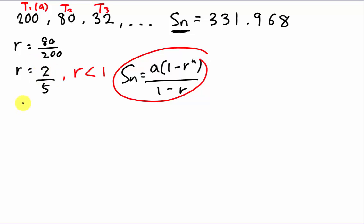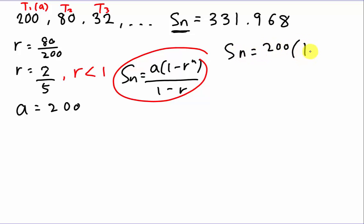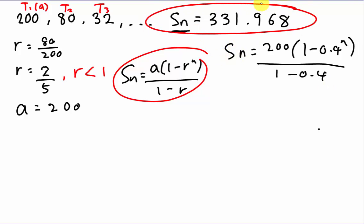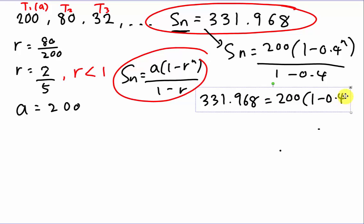Now we know R, and our first term A is 200. So Sn equals 200 times (1 minus 0.4^n) divided by (1 minus 0.4), which is divided by 0.6. The value of Sn is given, so we input: 331.968 equals 200 times (1 minus 0.4^n) divided by 0.6.